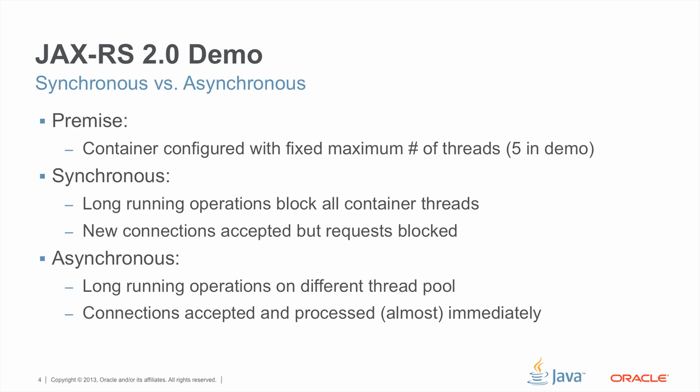The premise for this demo is that we have a fixed or bounded number of request threads configured in the environment in which JAXRS is running. In our demo that number is going to be five, but regardless of the number, it has to be fixed or bounded for the demo to make sense. As a result, the synchronous service is going to block the container threads while running the simulated computation, to the point that even though new connections will be accepted, they won't be processed as we reach the limit of threads that can operate on those requests.